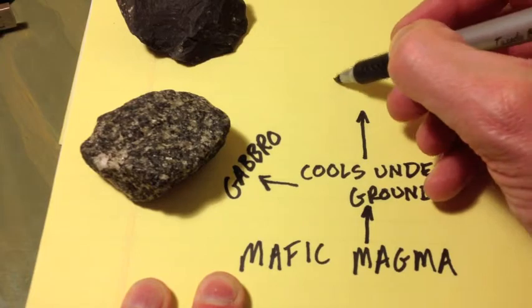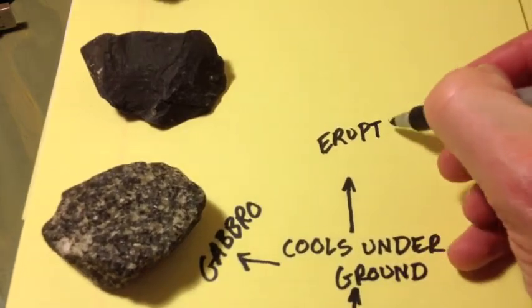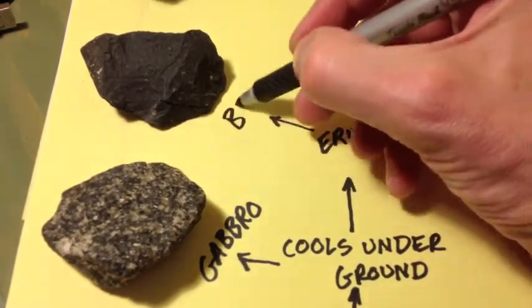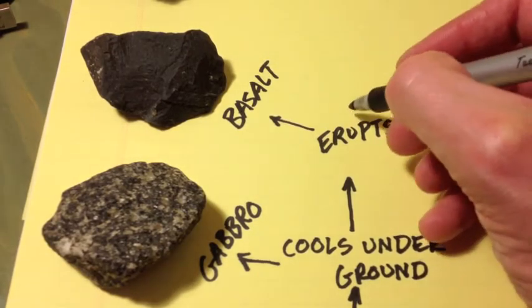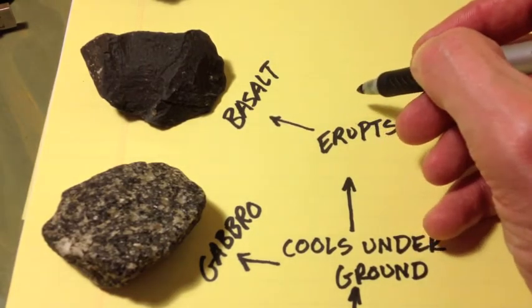Now, bring that magma up and erupt it on the surface, where it cools quickly, in a matter of minutes, hours, days, whatever, you get basalt, which is fine-grained.